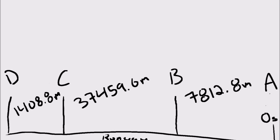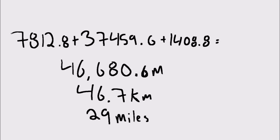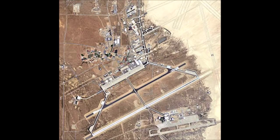Now that we know how far the plane traveled between each of the events, we can do some simple addition to find out how far the runway really is. Adding up all the numbers gives us 46,680.6 meters, or 46.7 kilometers, or 29 miles. The longest known runway is Edwards Air Force Base located in California, which is a length of about 12 kilometers long. So no, the runway in the ending of Fast and Furious 6 is not based off any known runway in the entire world.